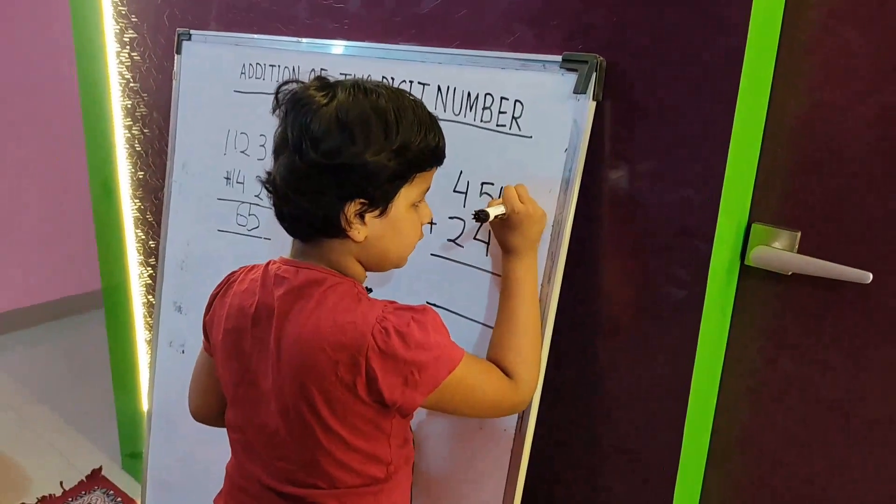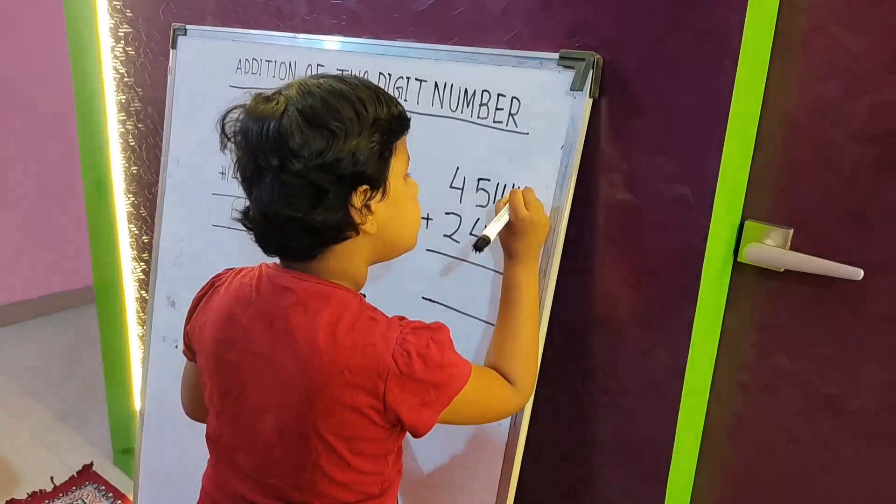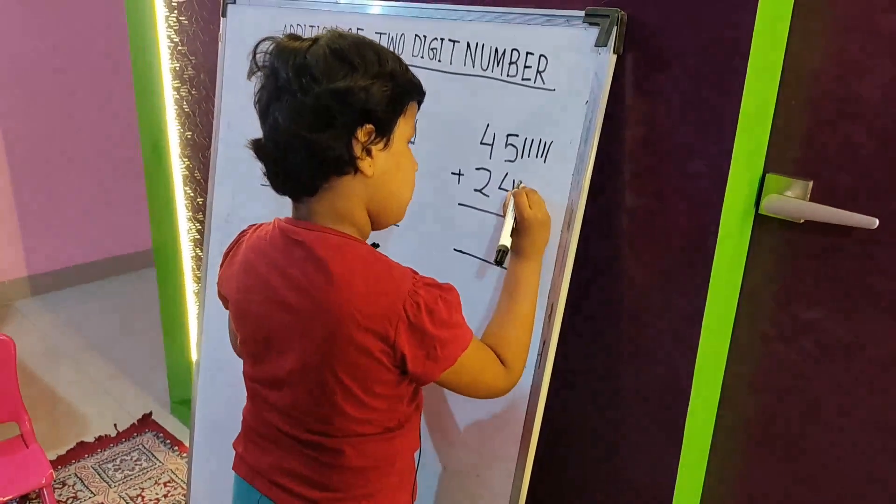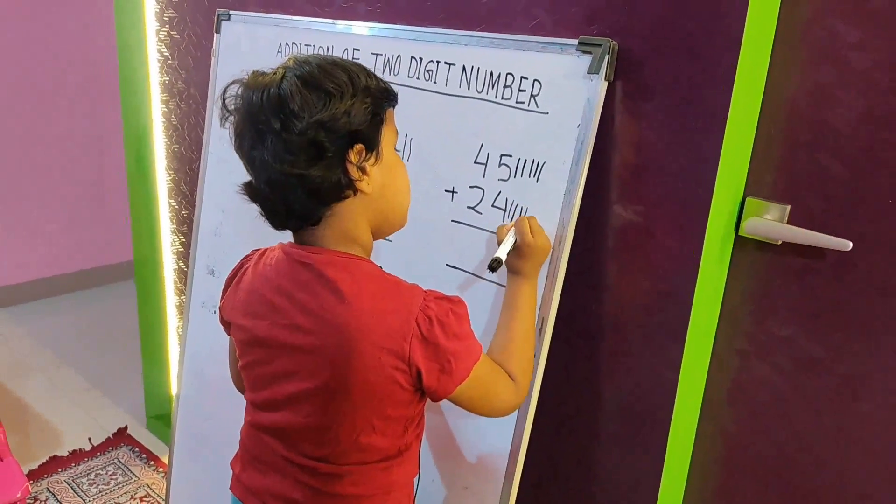And this is here. And this is here. This is five. One, two, three, four, five. And this is four. One, two, three, four.